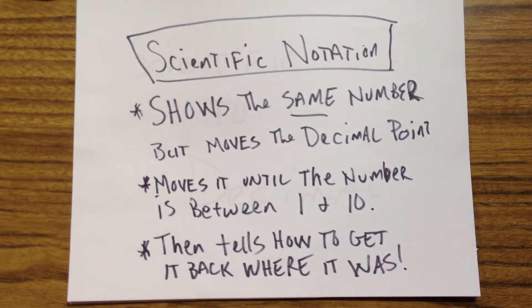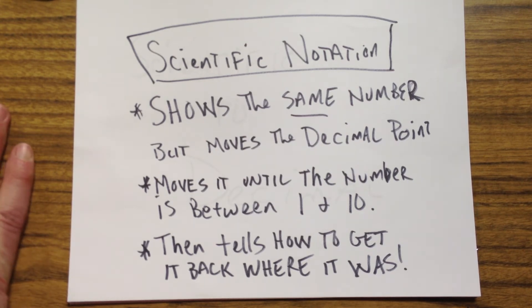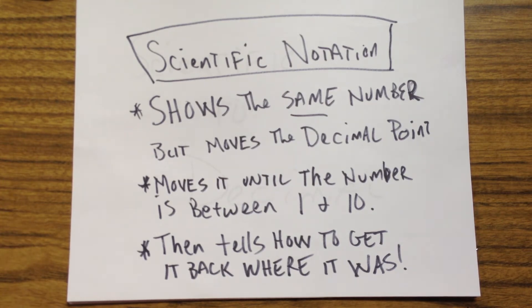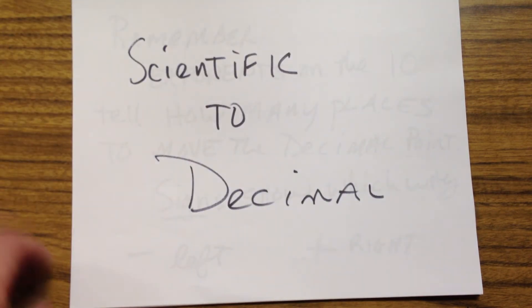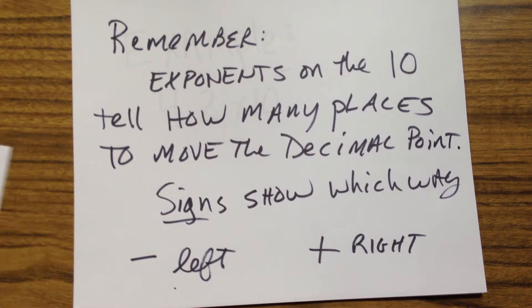So what is scientific notation? Scientific notation shows the same number — you're not changing the value of the number, you're just showing it in a different way. It moves the decimal point in a way that makes it easier to see for incredibly large or incredibly small numbers. We move the decimal point until the number shown is between one and ten, then we put exponents on to tell how to get it back where it was. The exponent on the ten tells you how many places to move the decimal point, and the sign shows which direction — negative moves left, positive moves right.